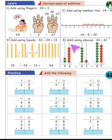Add using abacus method: 26 plus 61. For 26, add 2 beads in the tens column and 6 beads in the ones column. For 61, add 6 beads in the tens column and 1 bead in the ones column. 2 plus 6 gives 8 beads in the tens column, and 6 plus 1 equals 7 beads in the ones column. So the answer is 87.